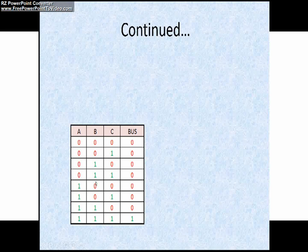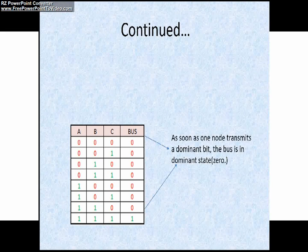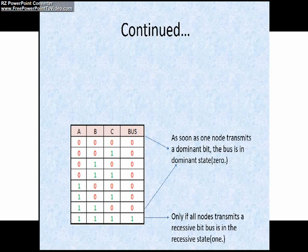If any one of the inputs is 0, then the output will be 0. So according to this, on a CAN bus, if all the nodes transmit 1, then only the value will be 1. Otherwise, the value will be 0.